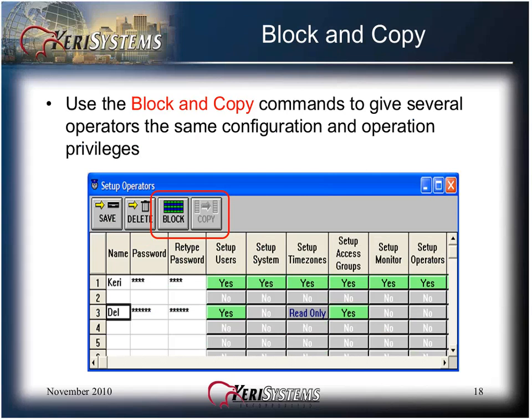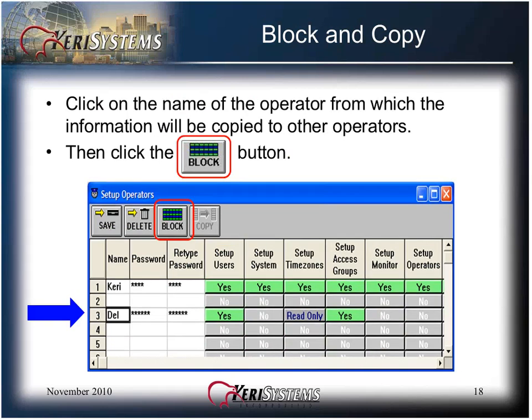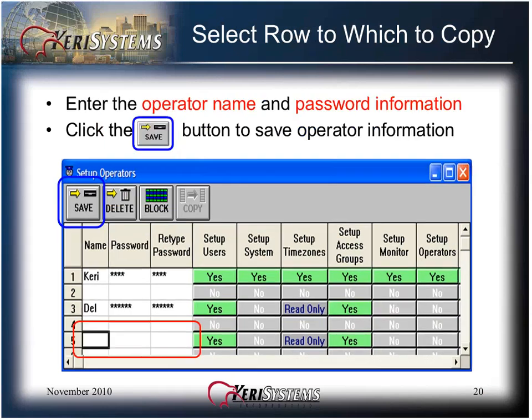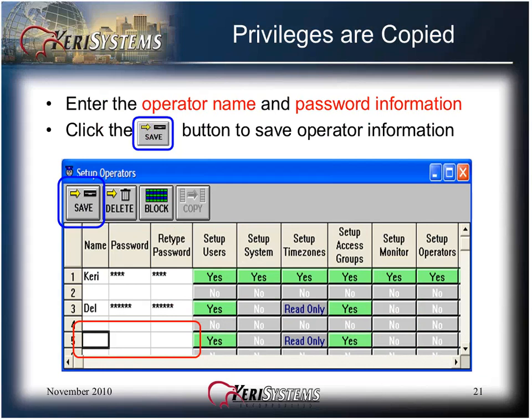Use the Block and Copy commands to give several operators the same configuration and operation privileges. This saves time in programming different operators with the same privileges. Select the operator by clicking on the name of that operator from which the information will be copied to other operators, then click the Block button. Click on the row to which to copy, then click the Copy button. Enter the different operator name and password information and click the Save button. This concludes Module 15 of 16, Setup Operators.